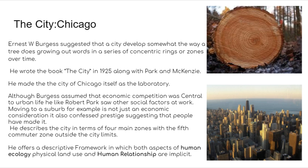Burgess suggested that a city develops somewhat the same way as a tree — it expands outward in a series of concentric rings or zones over time. While he assumed economic competition was central, like Robert Park he also acknowledged other factors important in city development. He described the city in terms of four main zones, plus a fifth commuter zone outside city limits, offering a descriptive framework combining physical land use and human relationships. His model was primarily based on Chicago of his time.